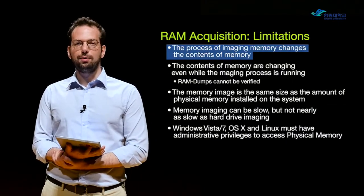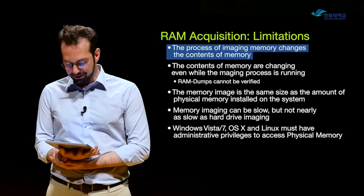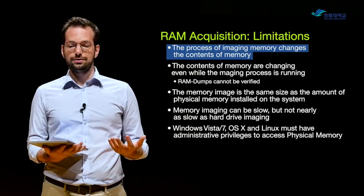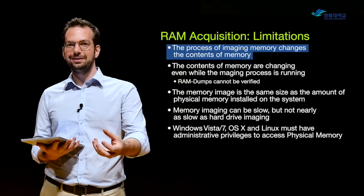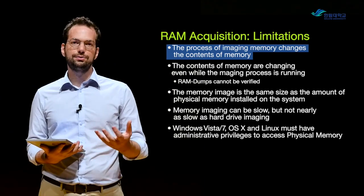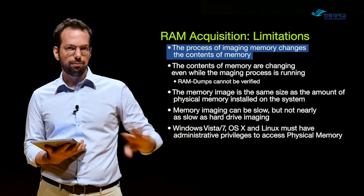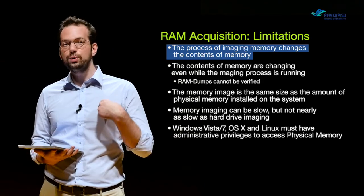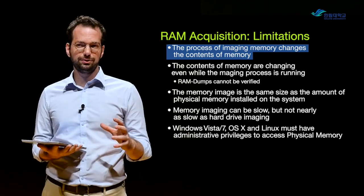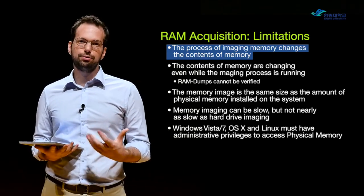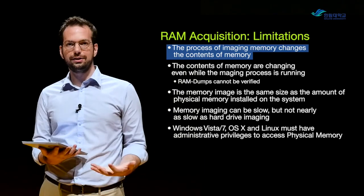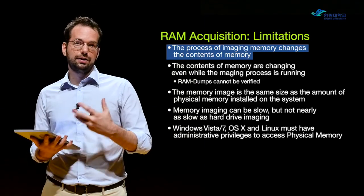Some limitations of acquiring RAM: first, the process of imaging memory changes the contents of memory. We can only take a copy of memory while the computer is on, which means we have to actually interact with the computer and load a program onto it — which loads into the RAM we're trying to copy. This is very different from a hard drive where we use write blockers and can get an image without modifying any data. With RAM, the data is always changing and we have to change a little bit of it to copy everything. So for court, you have to have really good documentation about how you collected RAM, why you collected it, and all of the processes you went through.